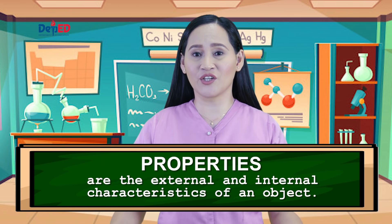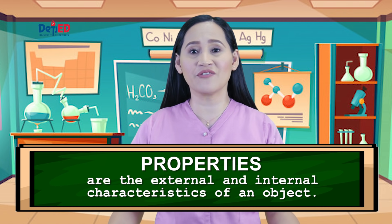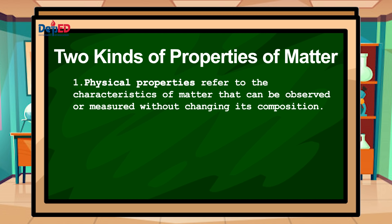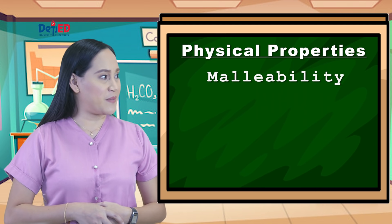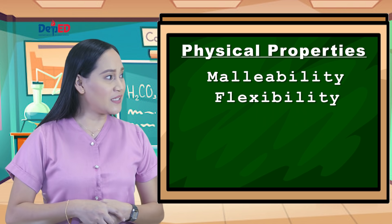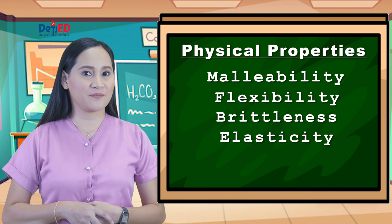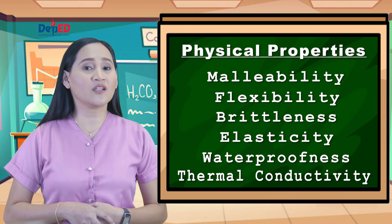I know you have your own answers in mind. Before we check, let us know first what properties mean and its two kinds. Properties are the external and internal characteristics of an object. There are two kinds of properties of matter. First, we have physical properties that refer to the characteristics of matter that can be observed or measured without changing its composition. Some examples are malleability, flexibility, brittleness, elasticity, waterproofness, and thermal conductivity.